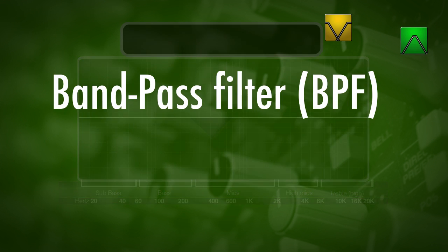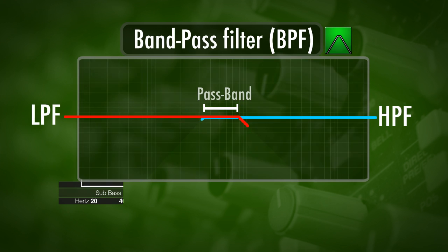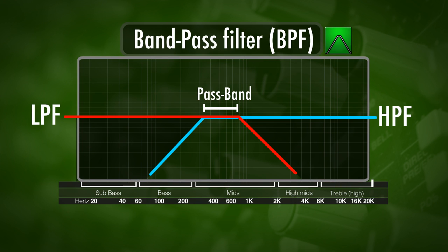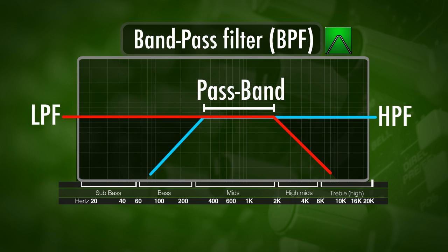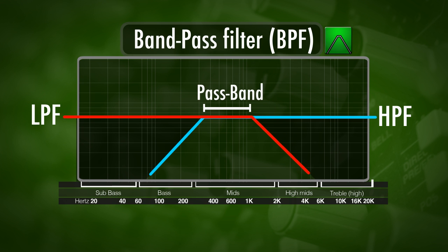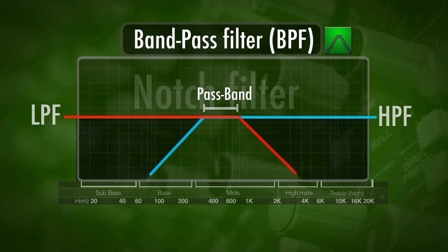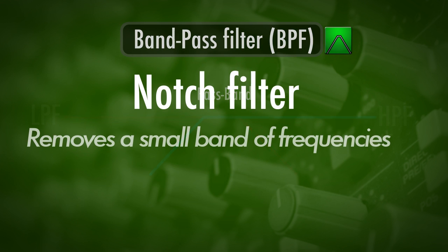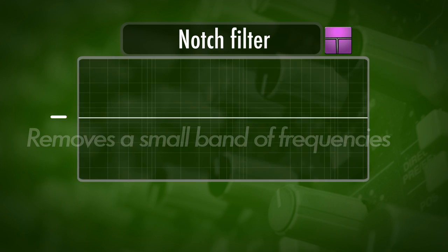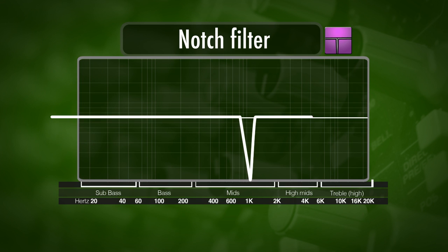We also have a band pass filter, which basically removes all the low frequencies and the high frequencies from a point and keeps a band of frequencies in the middle. Then we have a notch filter. A notch filter is basically a band cut filter but with a really narrow band, so it just affects a really small group of frequencies.